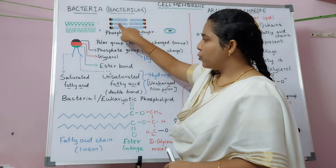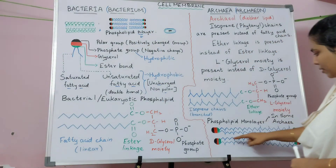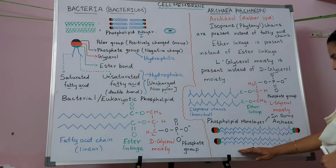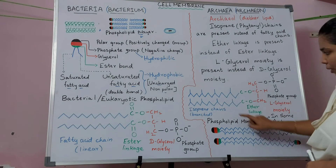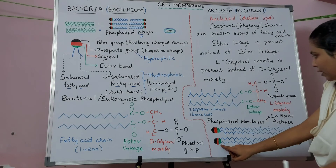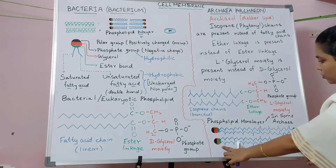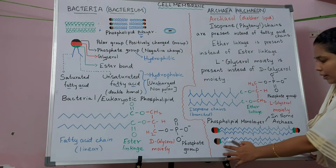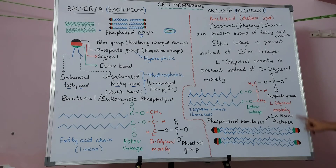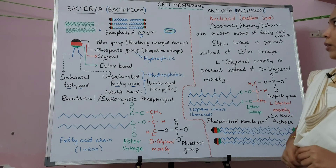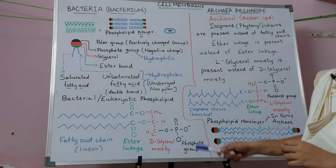In this diagram, the blue color lines indicate isoprene chains. The green color regions represent ether linkages, present on both sides. The red color region indicates the L-glycerol moiety, and the black region indicates the phosphate group. This is the basic difference between the cell membrane of archaea and bacteria.